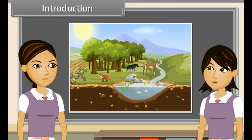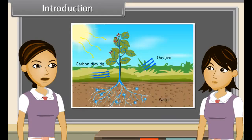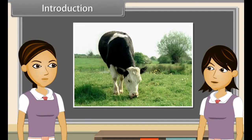When we observe closely, we find that all living things on earth actually depend on the sun for their food directly or indirectly. Plants use the energy of the sun and prepare food by photosynthesis. These plants are eaten by herbivores and omnivores, and carnivores eat herbivores. Thus, it is energy from the sun which provides food for all plants and animals.